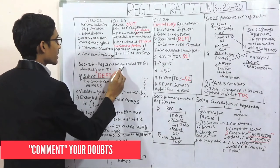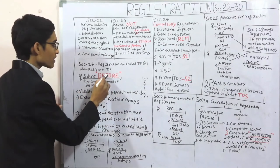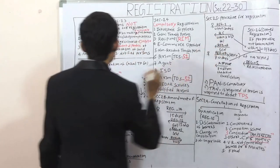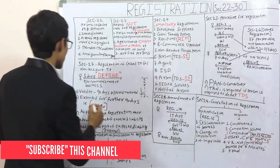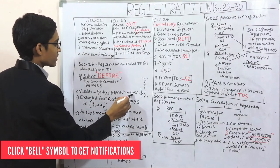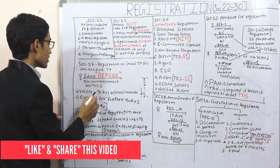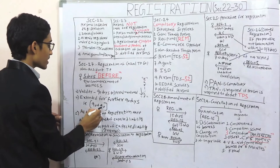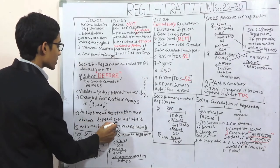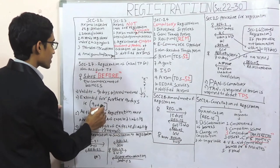Section number 27 — registration of casual taxable person or non-resident taxable person. They have to apply for registration 5 days before the commencement of business, whereas others apply within 30 days from the date they are liable to get registered. Validity: the registration certificate is valid for 90 days or the period mentioned in the application, whichever is earlier — a maximum of 90 days, extendable for a further 90 days, making a maximum of 180 days. At the time of registration, the non-resident taxable person must make an advance deposit of expected liability, credited to the e-cash ledger, and must make an additional deposit if the registration is further extended.